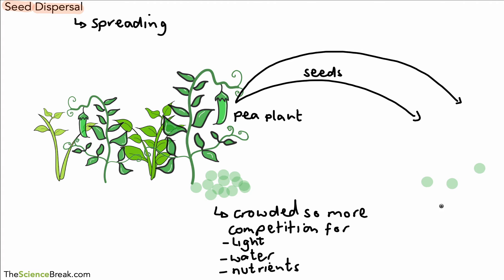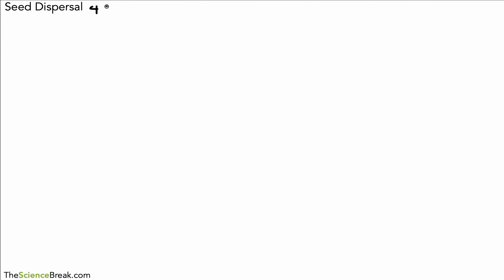What are they competing for? They all need sunlight for photosynthesis, they need water, and they need nutrients from the soil. Because they're all crowded and packed together, they're going to be competing for those resources. Whereas the ones on the right-hand side are spread further apart, so there's less competition, which means they can grow taller and healthier. There are four main ways we're going to look at for seed dispersal.